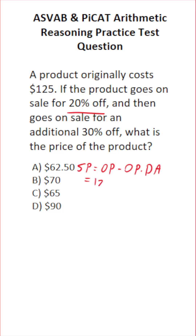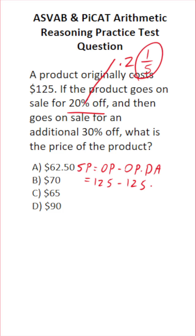The original price is $125. For this first discount, the discount amount is 20%, which is either 0.2 as a decimal or one-fifth as a fraction. I'm going to use the fraction one-fifth because it's easy to do mentally. This becomes 125 minus 125 times one-fifth, which is the same as 125 divided by 5, giving us 25.